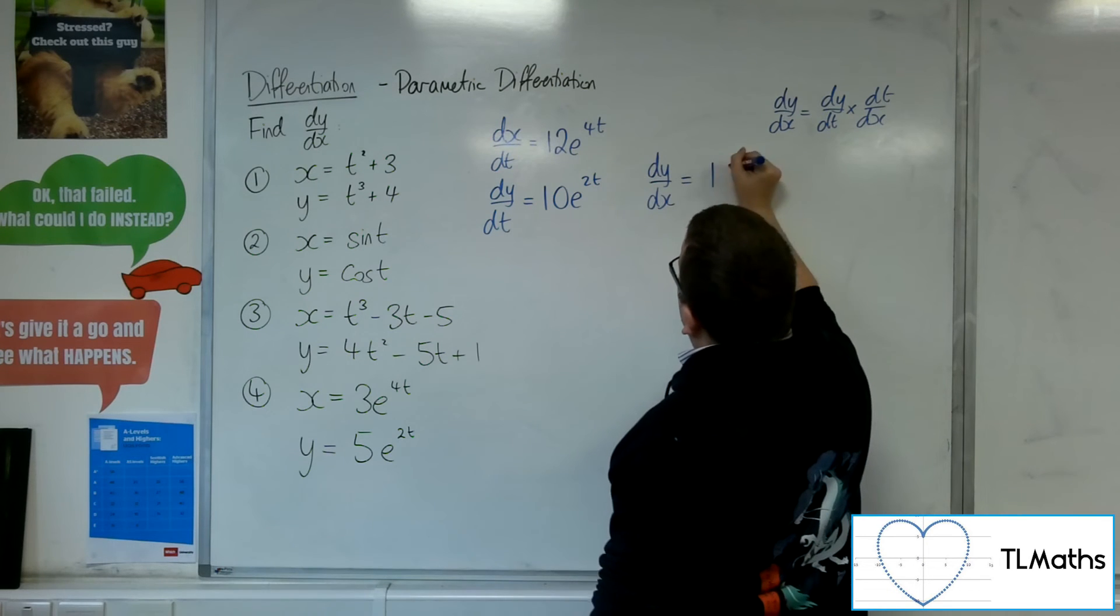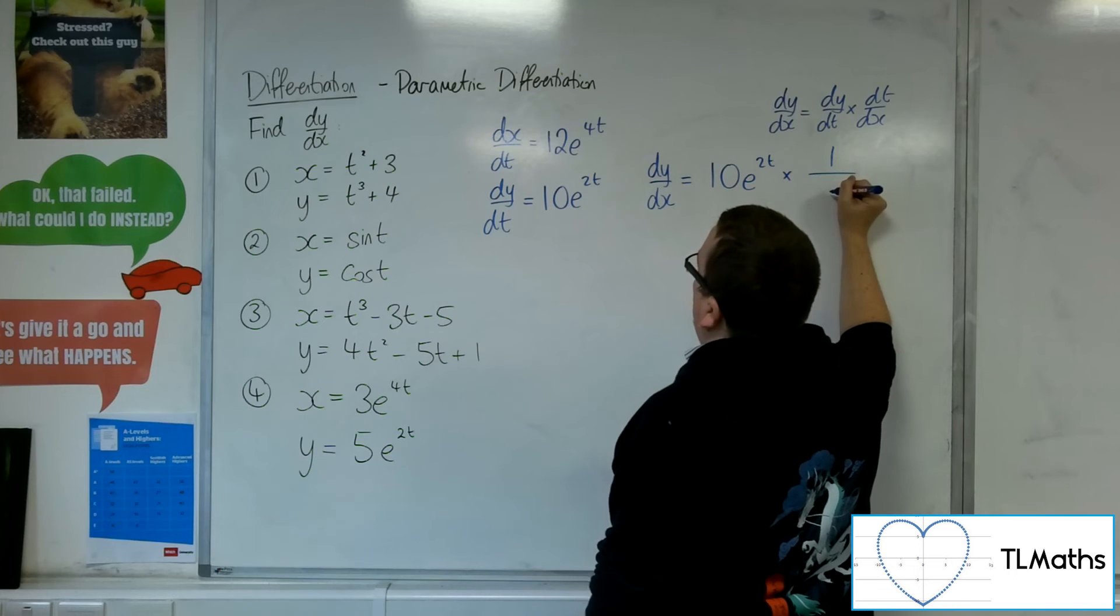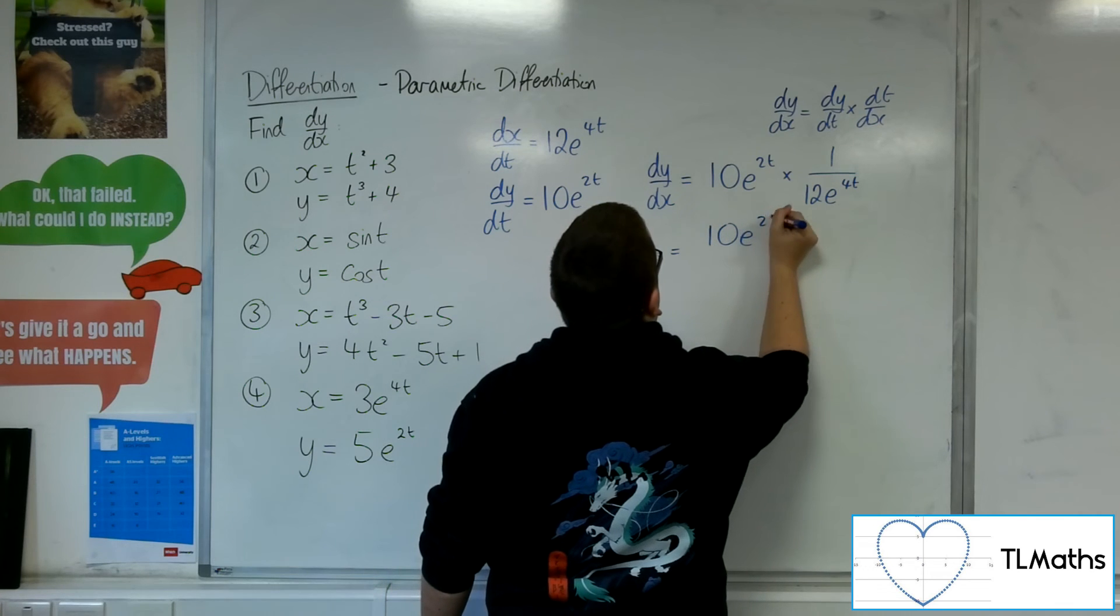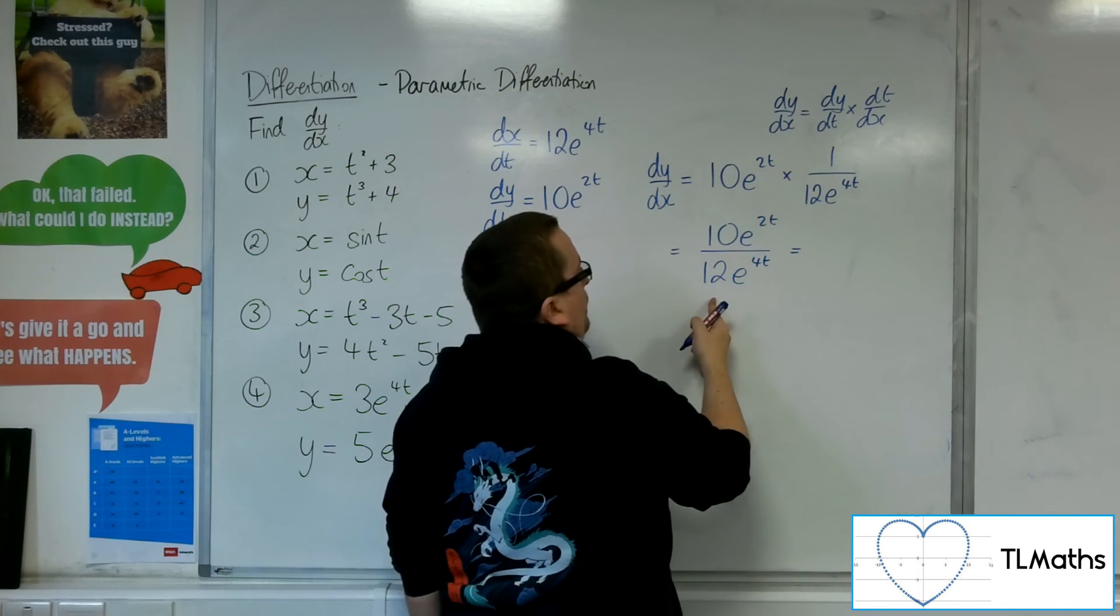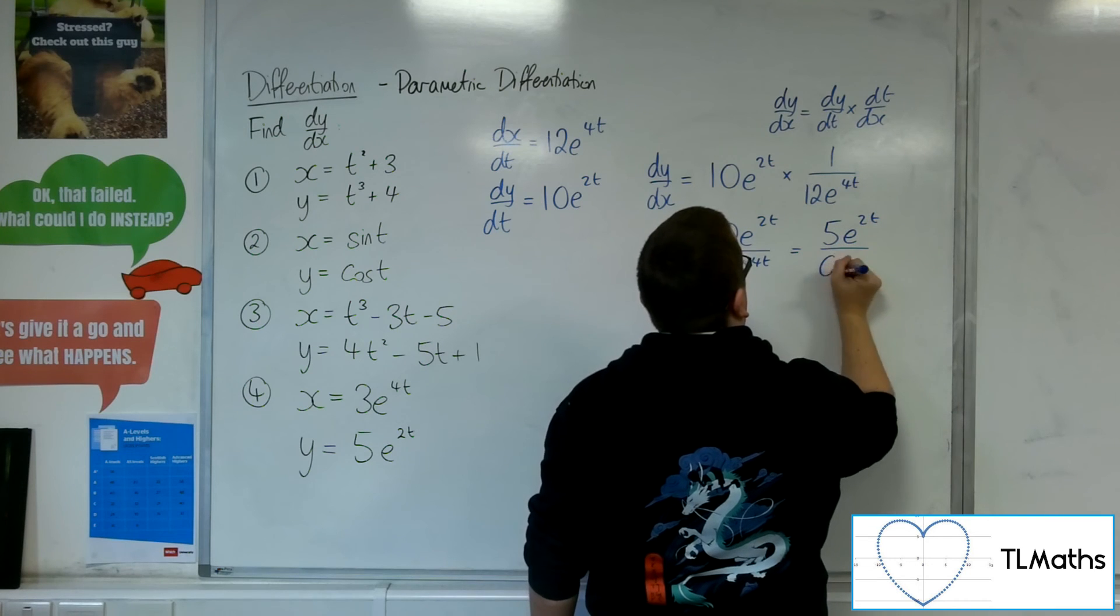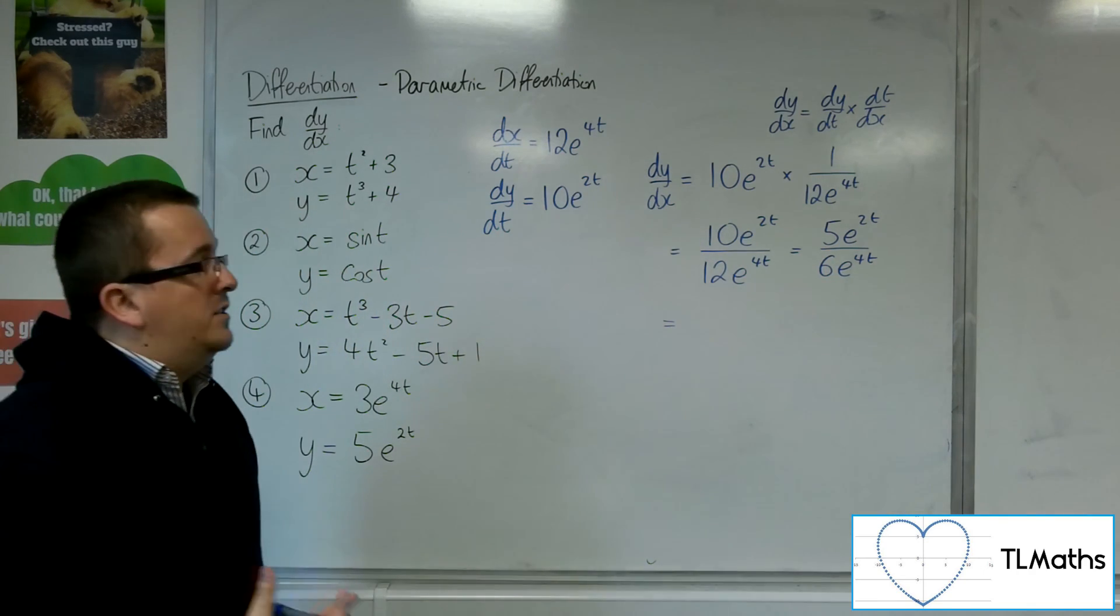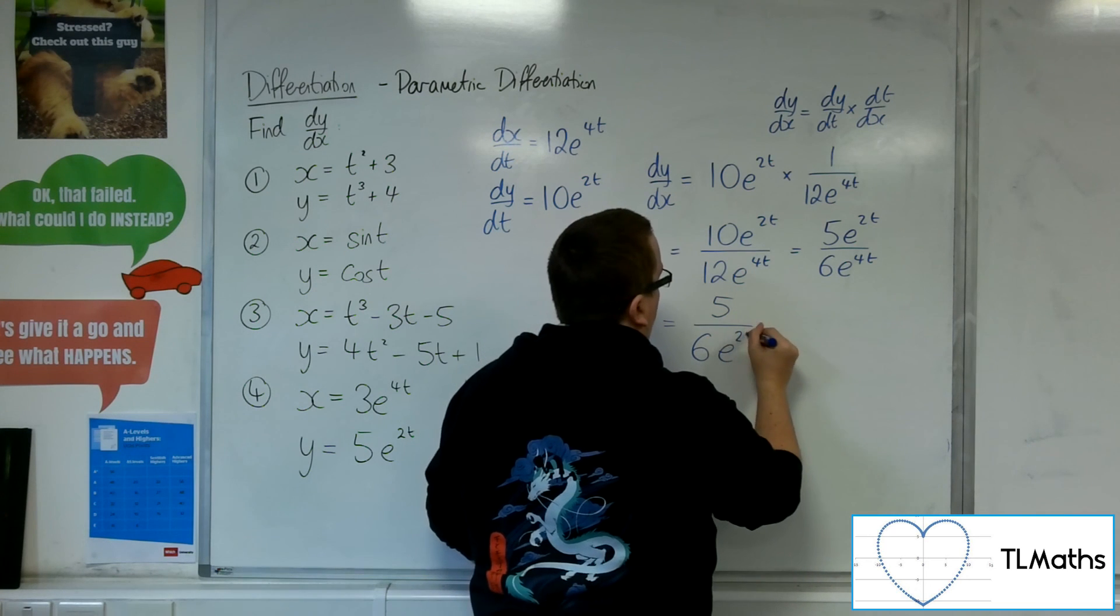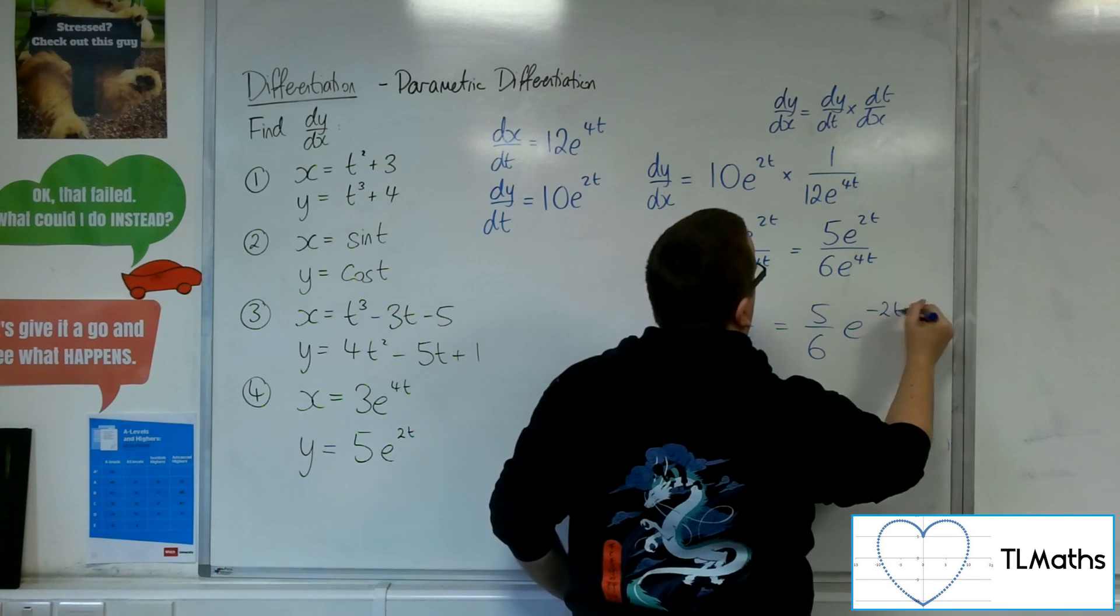So dy by dx is dy by dt times by 1 over dx by dt. So we have 10e to the 2t over 12e to the 4t. 10 over 12 is 5 sixths. And we can simplify this because we can divide top and bottom by e to the 2t. So we're going to have 5 over 6e to the 2t. Or 5 sixths e to the minus 2t if you prefer.